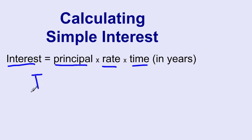We can also write this as I for interest, P for principal, R for rate, and T for time.